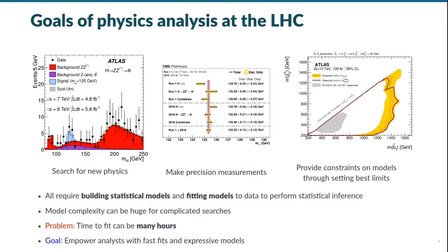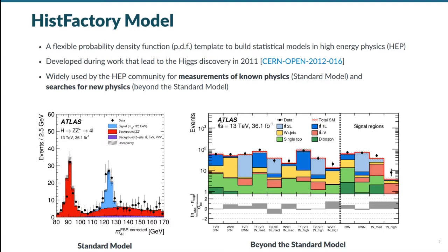We turn now to HistFactory, one of the most extensively used statistical models in all of high energy physics. This flexible probability density function template was first developed in the field as part of the efforts in the search for the Higgs boson. Since the discovery of the Higgs, it's gone on to be used ubiquitously in both measurements of known physics processes, that is physics that is described by what we call the standard model, as well as searches for new physics, which we refer to as being beyond the standard model.